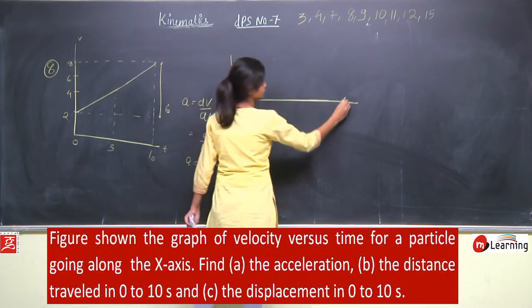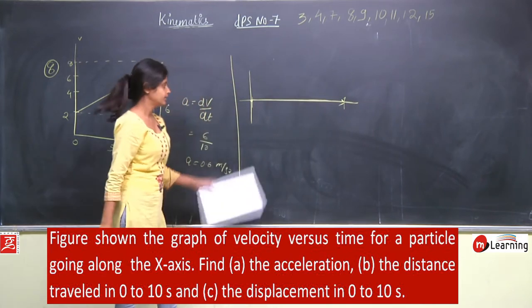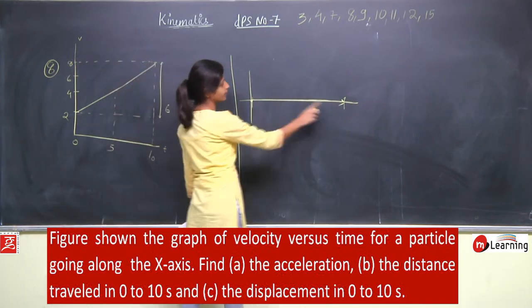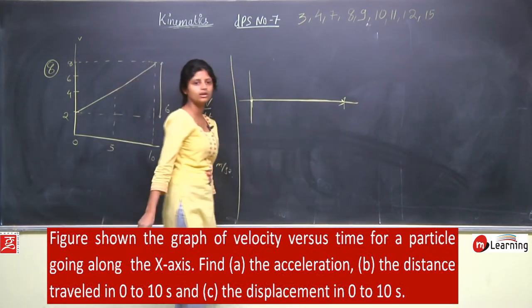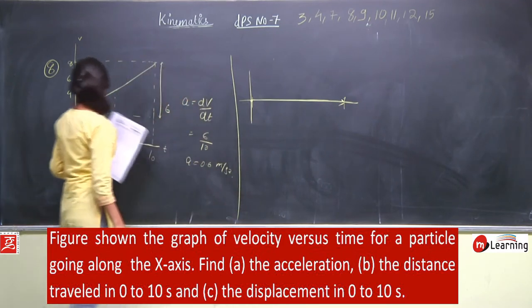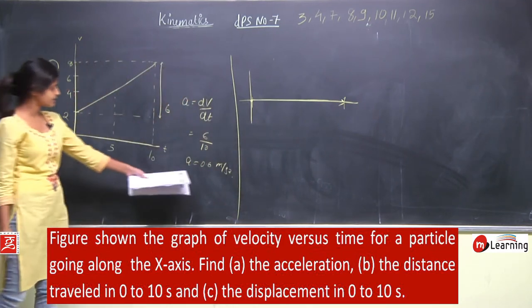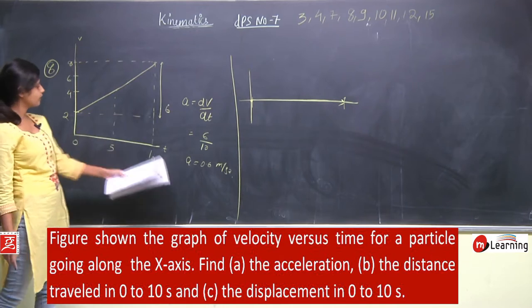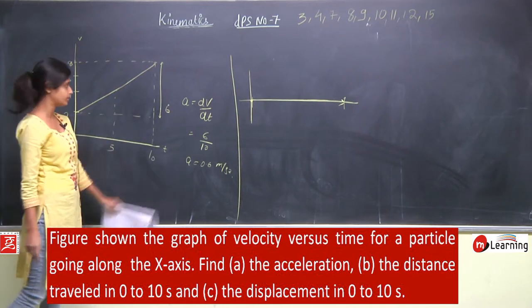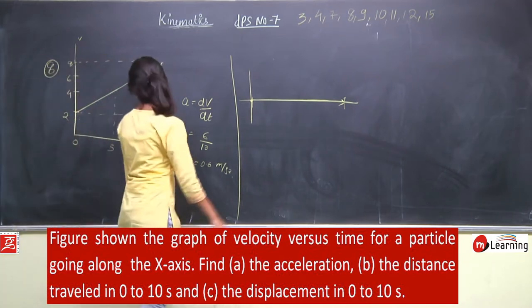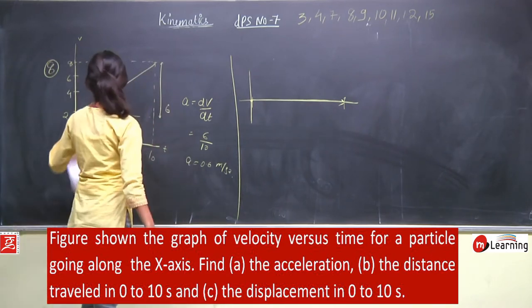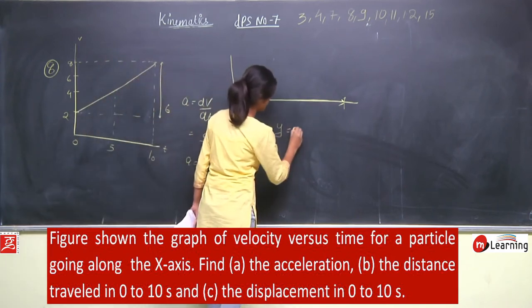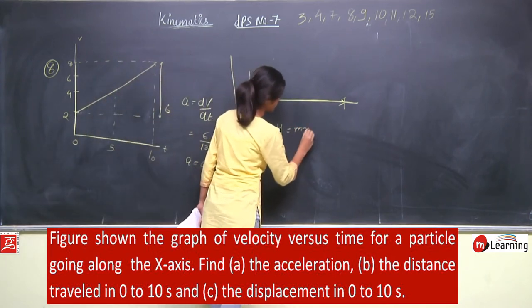यहाँ पर इसकी कुछ velocity है और acceleration positive है, मतलब आगे की तरफ ही move करता जा रहा है। इस point में direction कहीं change नहीं हुआ है। इसका मतलब जो distance होगा वही displacement होगा — graph से और acceleration से भी यह पता चल जाता है। दूसरा तरीका — इसकी equation लिखते हैं।